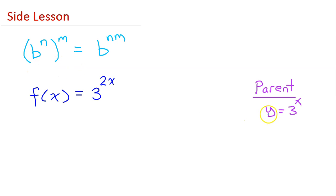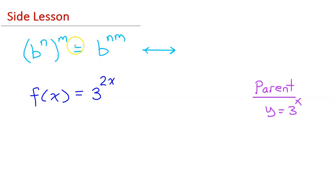Compared to the parent function y equals 3 to the x power, f of x equals 3 to the 2x power is a horizontal dilation by a factor of 1 half. Notice that this property of exponents is reversible.